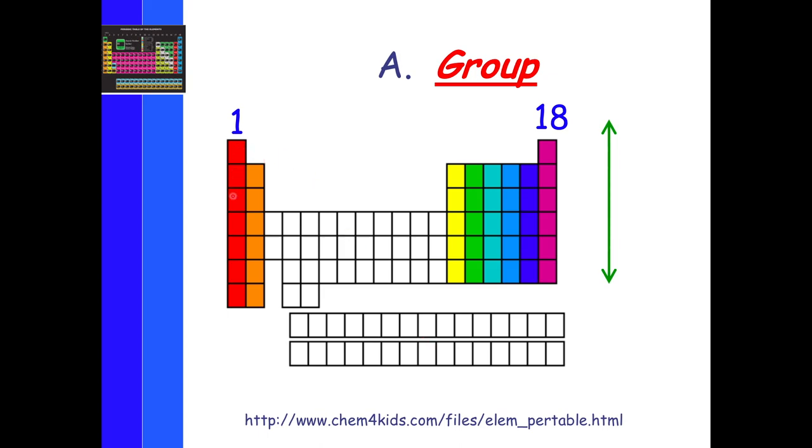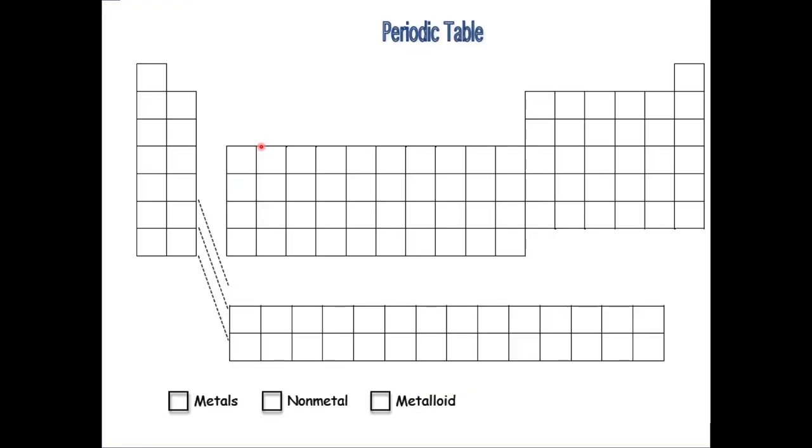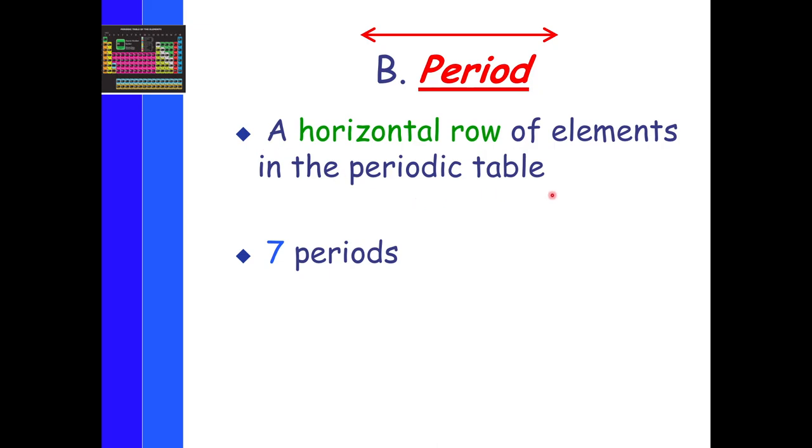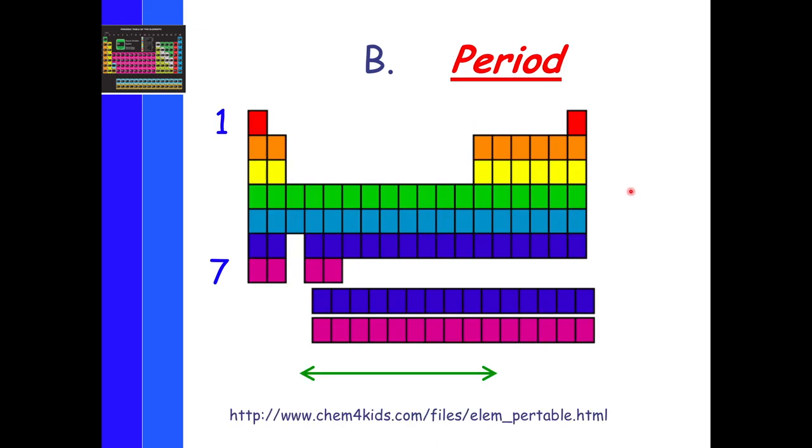For example, these are all 1s1 or s1. They have one electron in the s orbital. These have two electrons in the s orbital. And so on. So periods are horizontal rows with elements in the periodic table. And there are 7 periods. Like so. So these are the energy levels. These represent your energy levels relating back to the last unit.